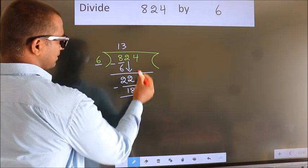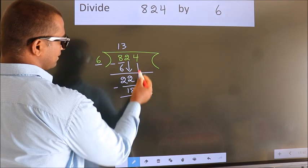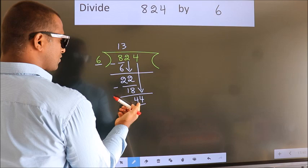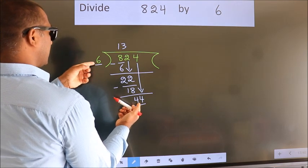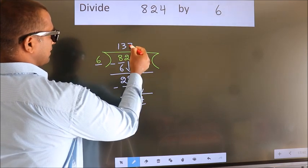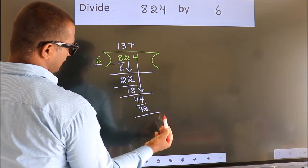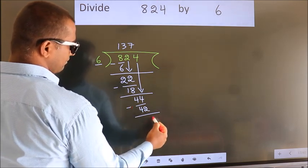After this, bring down the next number. So, 4 down, giving us 44. A number close to 44 in the 6 table is 6 sevens, 42. Now we subtract. We get 2.